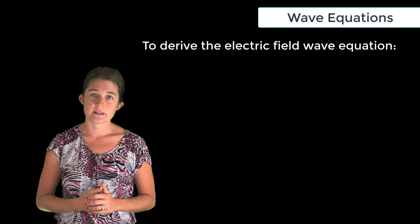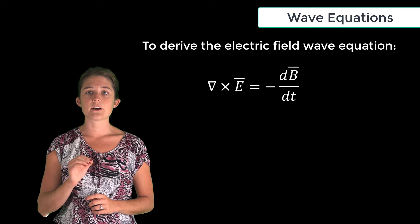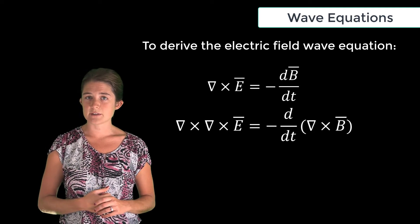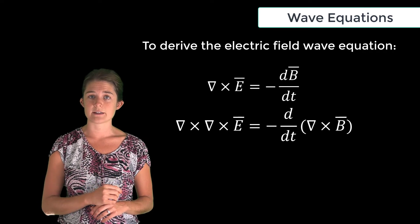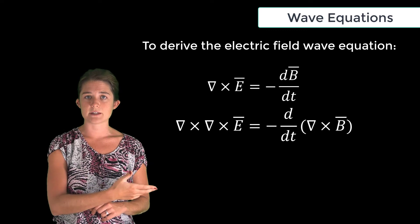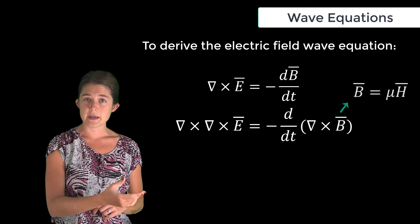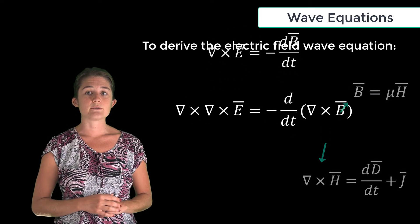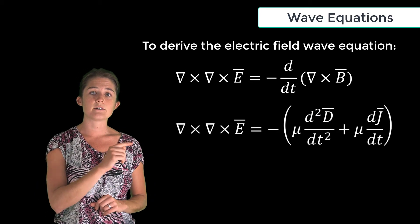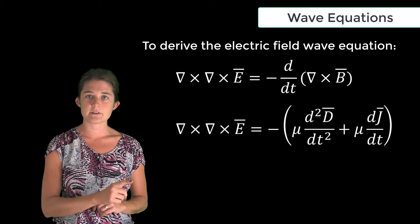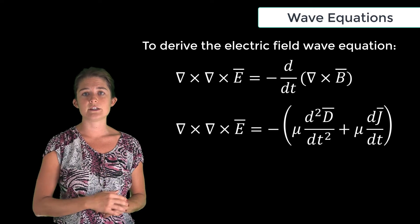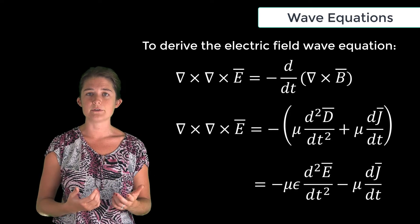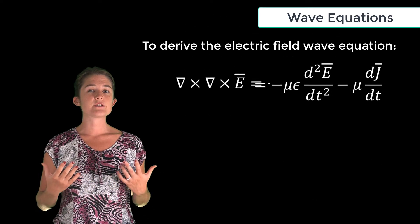To derive the wave equation for the electric field, we can start with Faraday's law: del cross E equals negative dB/dt. If we take the curl of both sides of this equation, we get del cross del cross E equals negative the time derivative of del cross B. Since B equals mu H, and since del cross H is dD/dt plus J by Ampere's law, we can rewrite this as del cross del cross E equals negative mu times the double derivative of D with respect to time plus mu dJ/dt, or negative mu epsilon times the double time derivative of E minus mu dJ/dt.